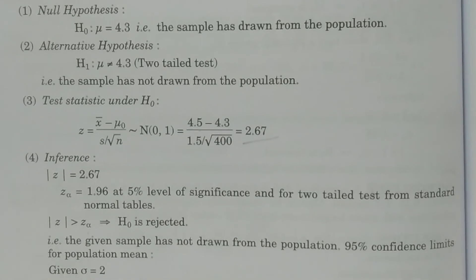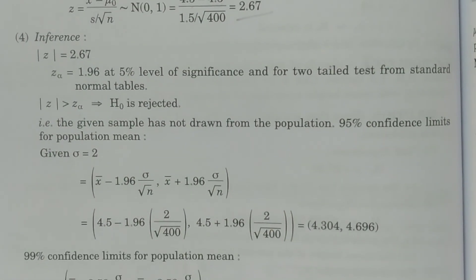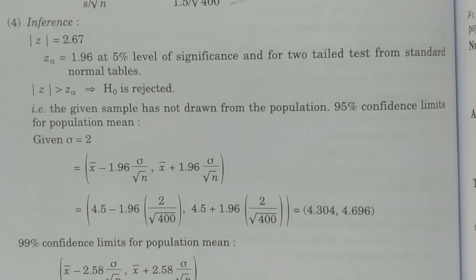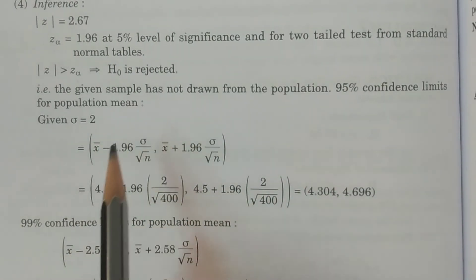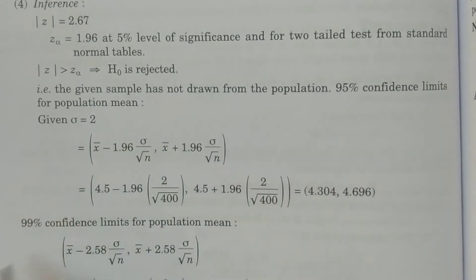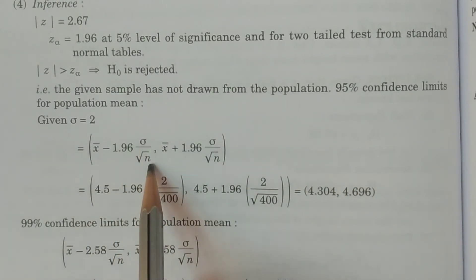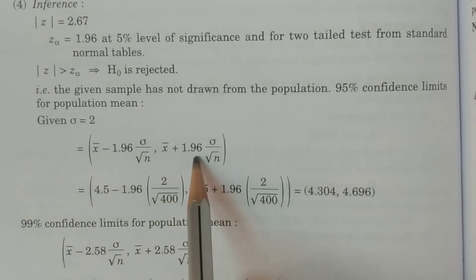Now for question 2: we calculate 95% and 99% confidence limits. It is given that sigma = 2, so sigma is known. The formula for 95% confidence limits for the population mean when sigma is known is: x̄ ± 1.96 × (σ / √n), i.e., the interval (x̄ − 1.96σ/√n, x̄ + 1.96σ/√n).